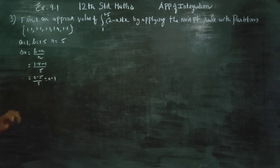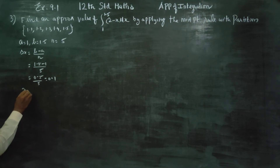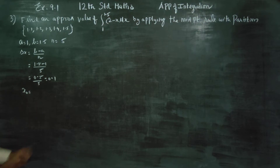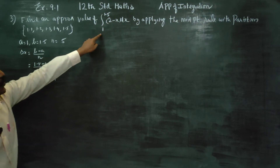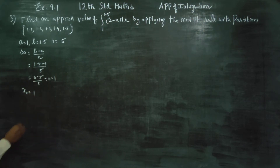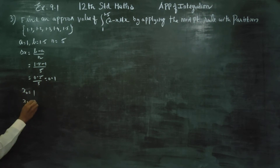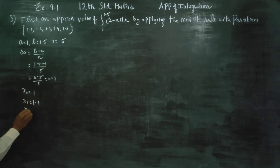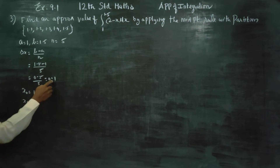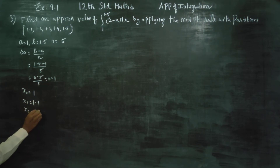After this, x0 is my starting number, that is 1. Now x1 is 1 plus 0.1, that is 1.1. X2 is 1.1 plus 0.1, that is 1.2.